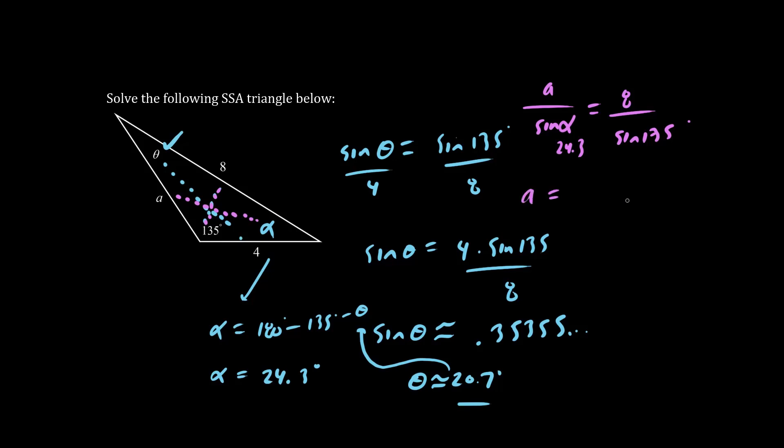We have a equals approximately sine 24.3 times 8 over sine 135. Using your calculator, we get a side length of 4.65-ish.